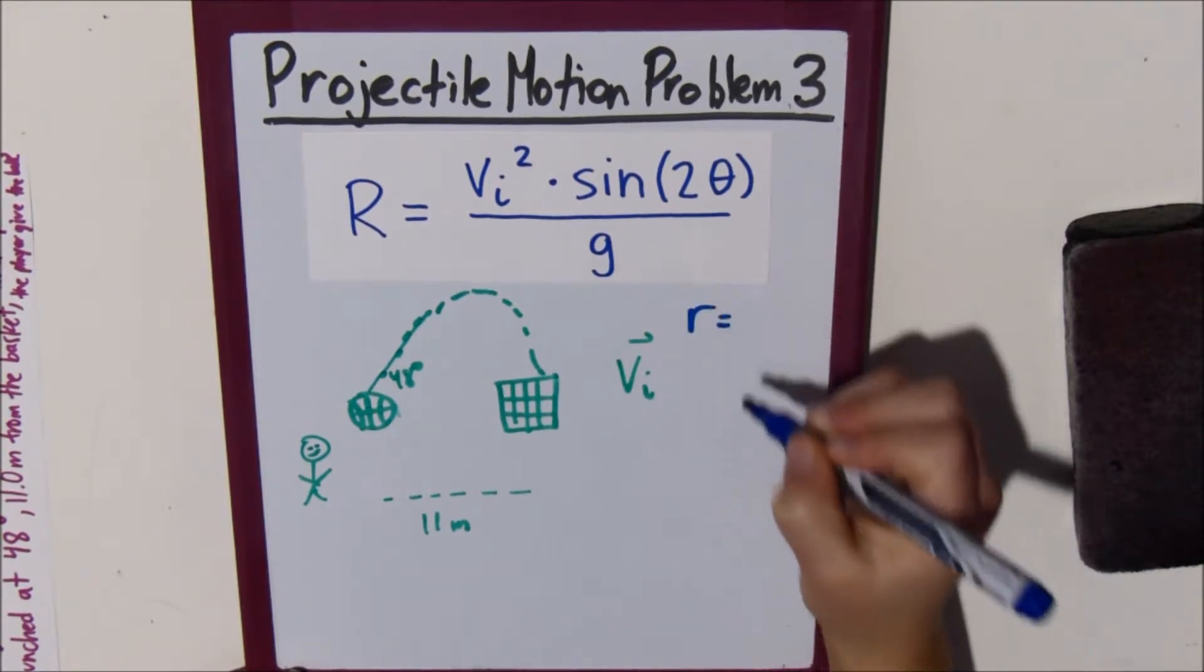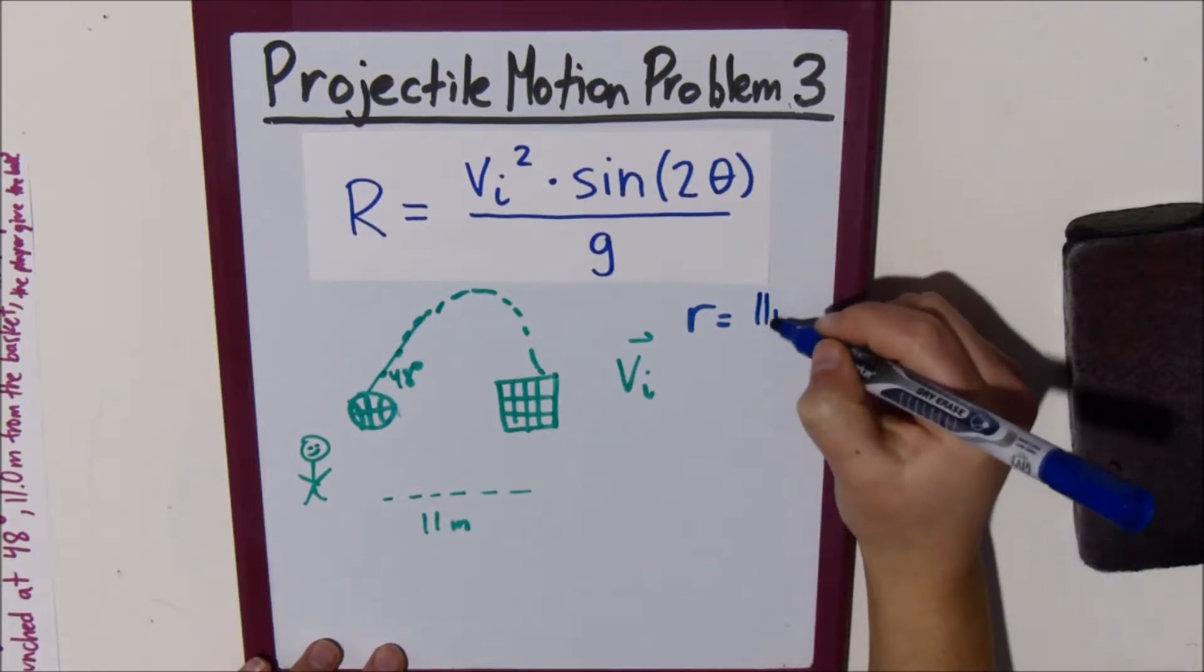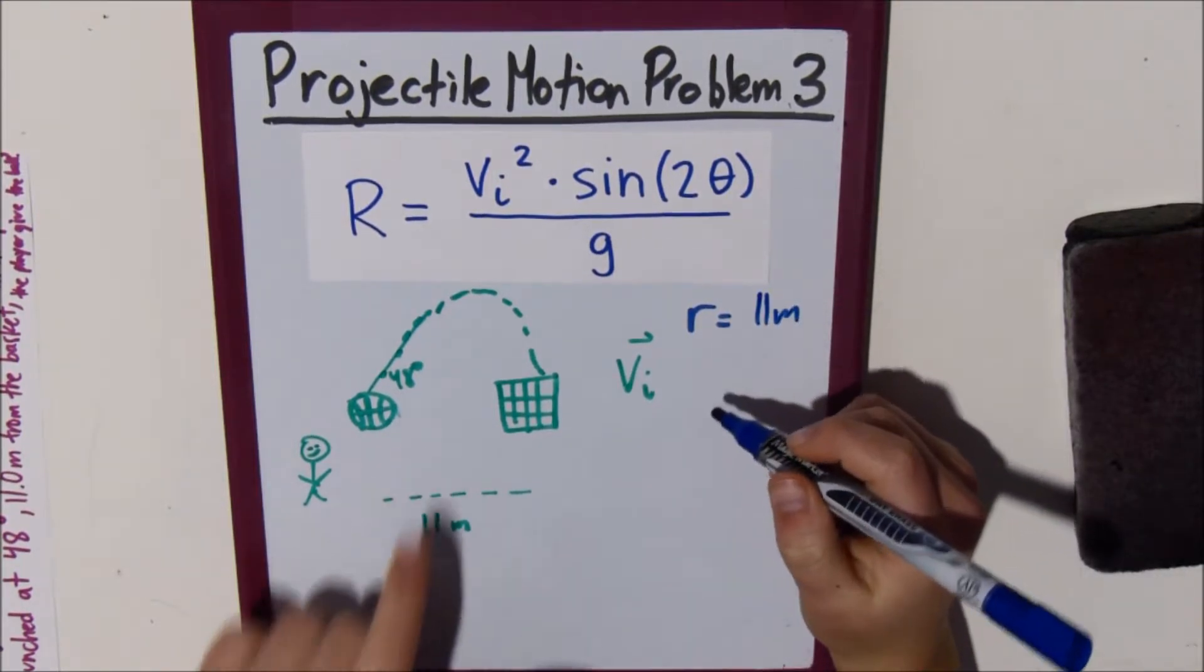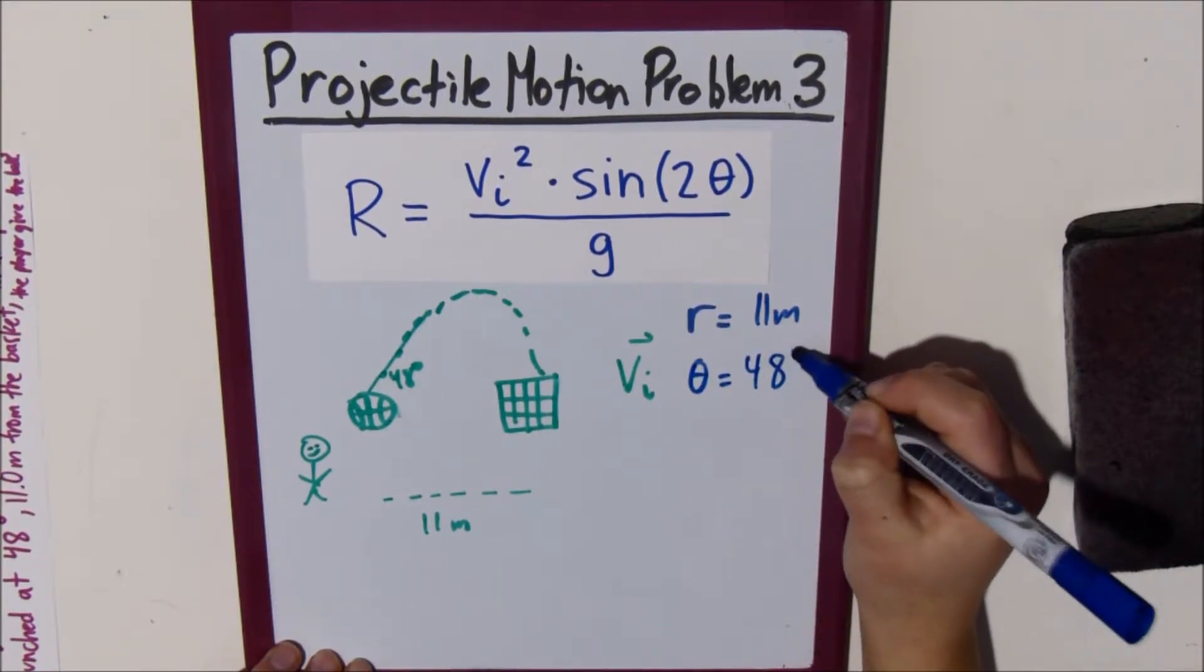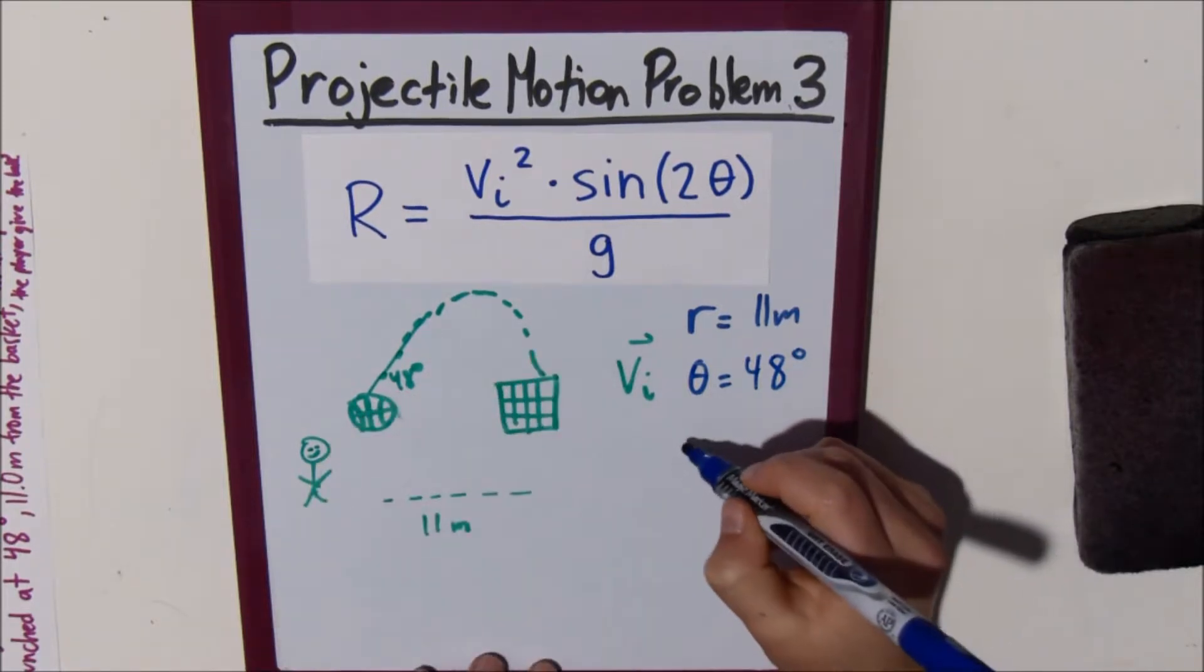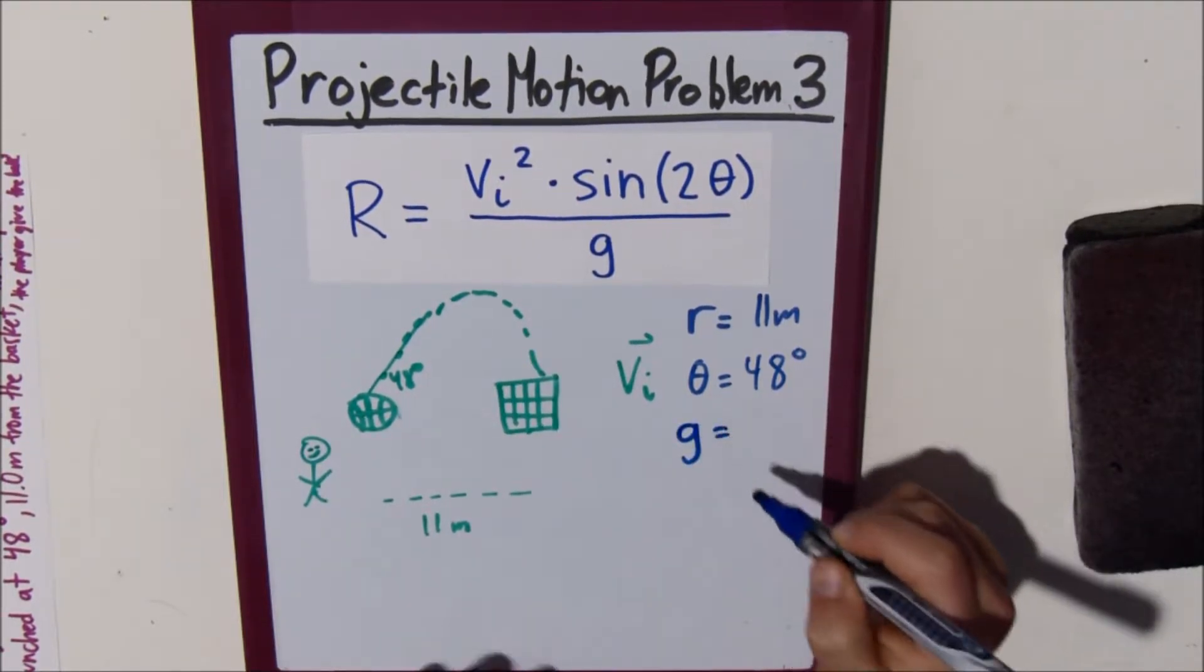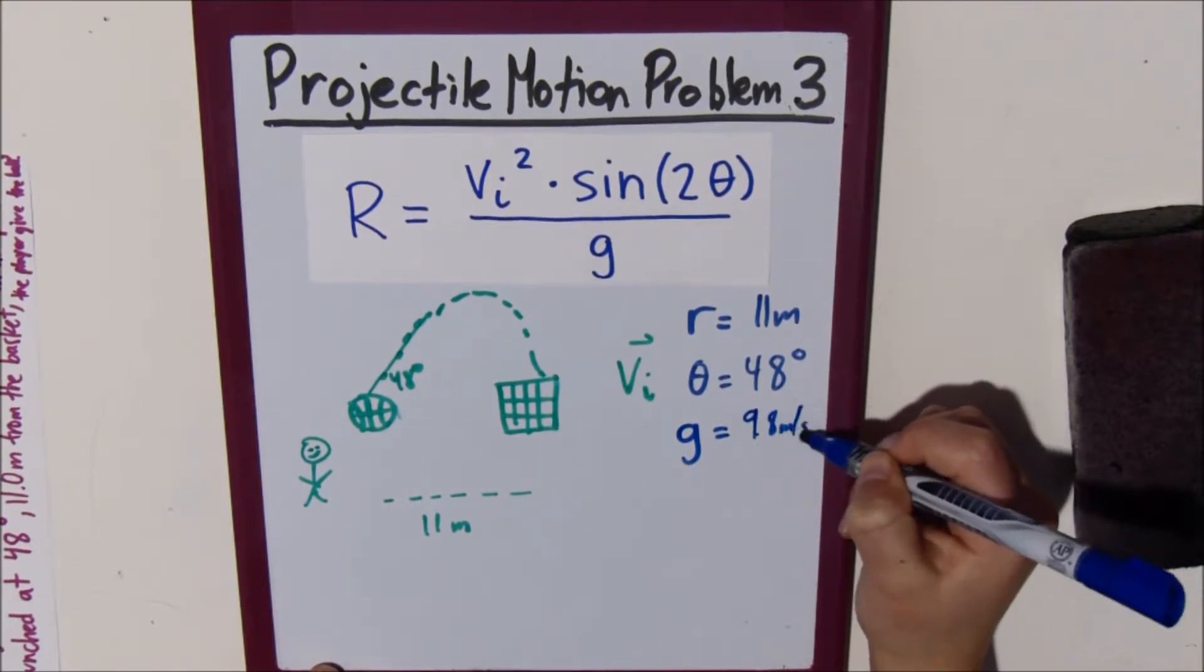So, we know that our range, or our dx, is 11 meters. We know that our angle measurement, theta, is 48 degrees. And, we also know that this g here is gravity, right? And gravity is always 9.8 meters per second squared, okay?